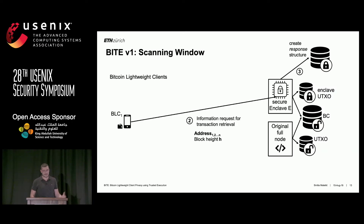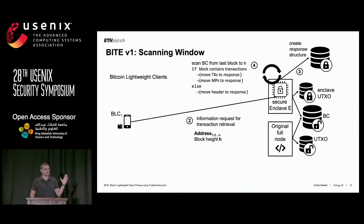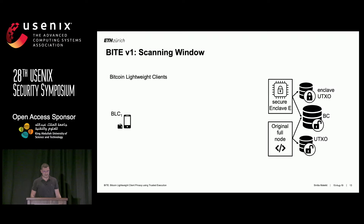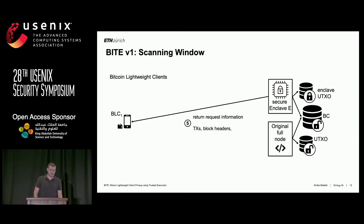Based on the client request, the enclave on the full node scans the blockchain and replies with a set of Merkle paths that the client uses to verify its own transactions. The enclave receives the address, creates a response structure, and uses a specifically created scanning mechanism to go from the latest block up to the block the client requested, scanning for transactions and moving them obliviously to the response. The OS cannot see whether in a specific block the client had or did not have a transaction. When finished, the response is returned to the lightweight client along with transaction block headers and Merkle paths, and the client can verify the proof of work, longest chain, and transactions.